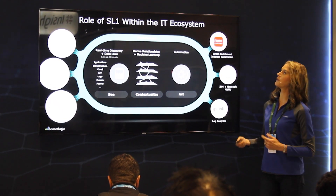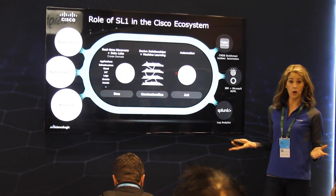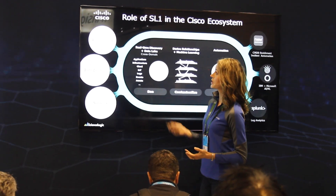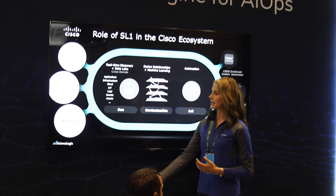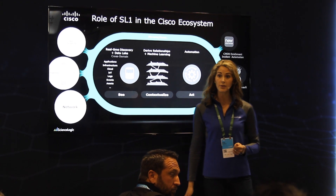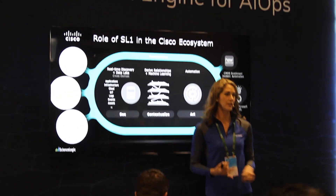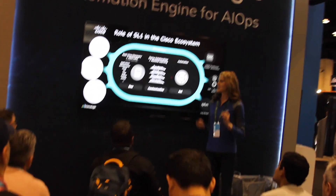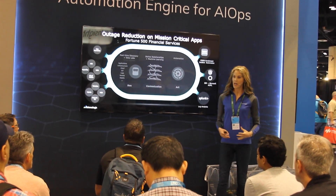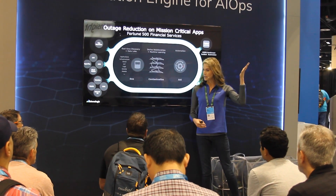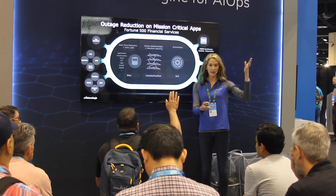Now let's see where SL1 fits in the Cisco ecosystem — it does span the gamut. SL1 collects data from all kinds of Cisco systems, from applications and APM systems like AppDynamics, to data center systems like Cisco HyperFlex and UCS with Cisco ACI and Cloud Center, and extending to network technologies like Unified Communications and HCS. So how do these insights apply in the real world to solve real business problems? Just a quick show of hands: who's using AppDynamics for application performance? Cisco UCS and ACI? Cisco Unified Communications or HCS?